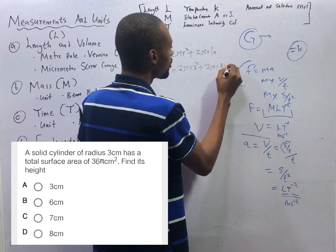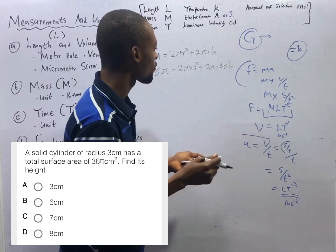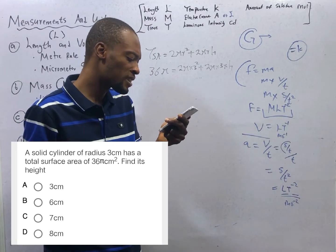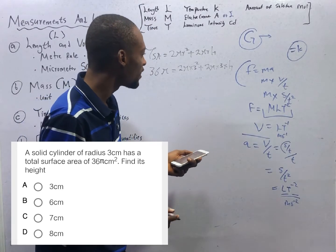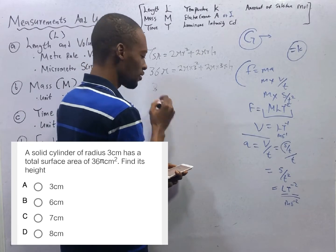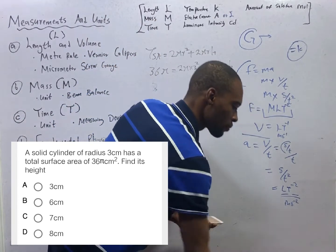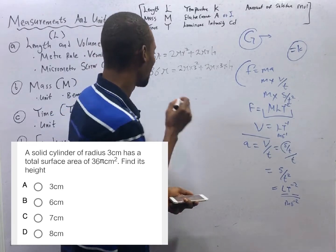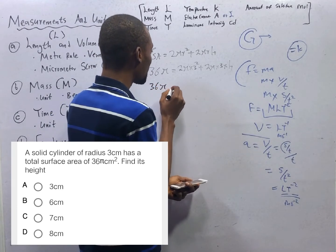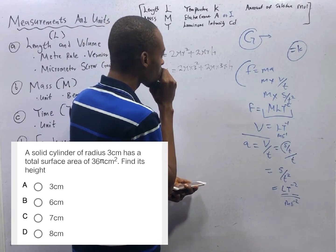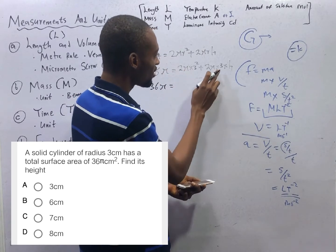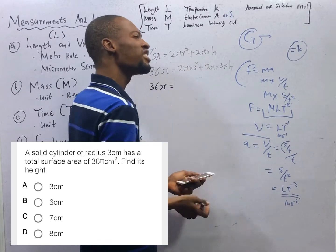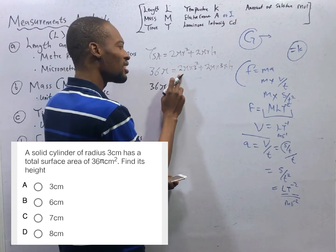So 36 pi is equal to 2 pi radius times 3 squared plus 2 pi times 3 times h. So that is basically substituting. If we decide to factorize out pi. We have 36. You can support the pi marker. 36 pi is equal. There is pi here. There is pi here. From here. 3 squared. 3 times 3 is 9. Yes. 9 times 2 is 18.